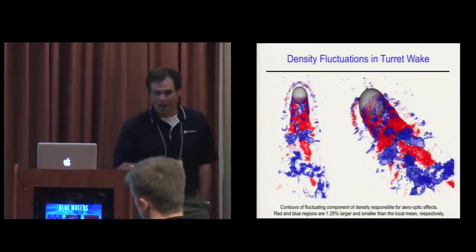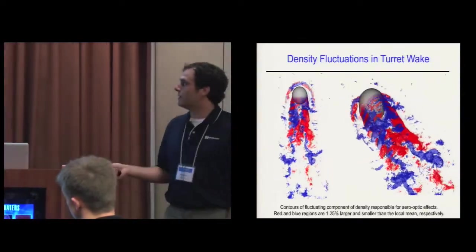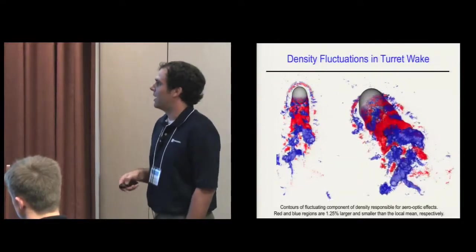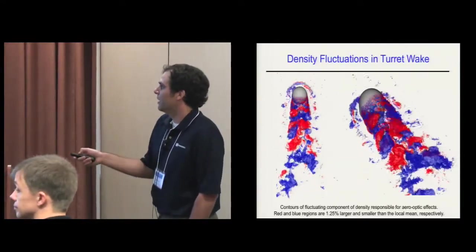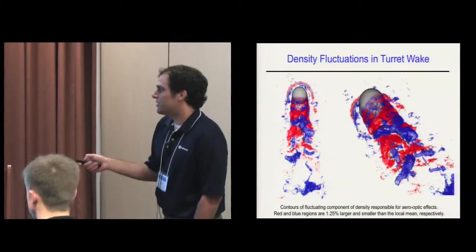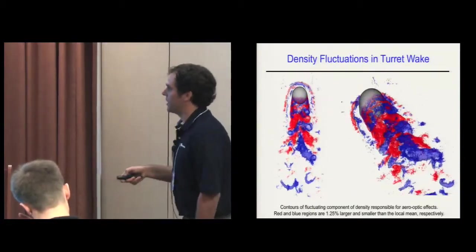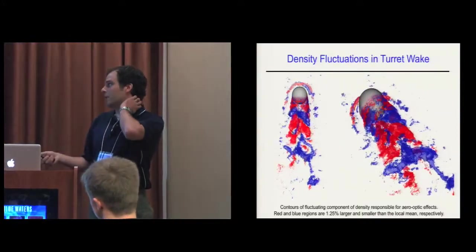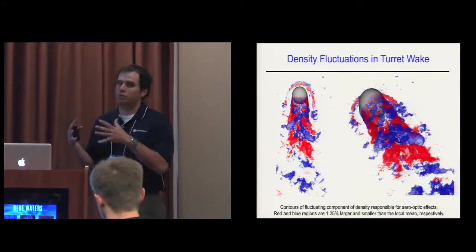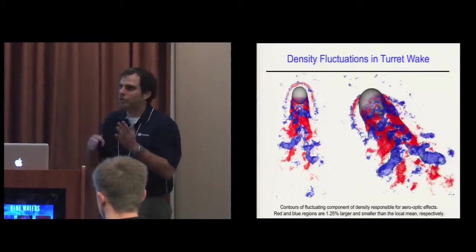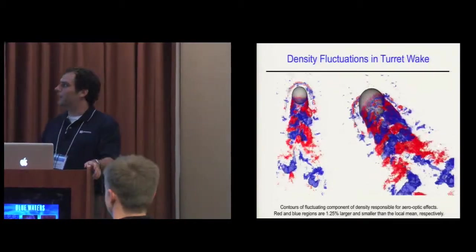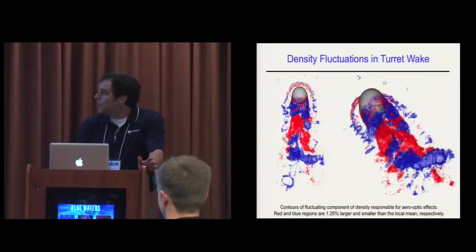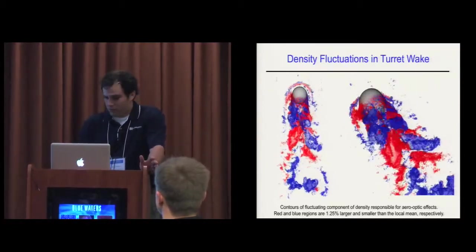This is the optically important parameter - the fluctuating density, where red is a higher region of density and blue is lower. You can see a lot of similar structures that you see in the pressure, because pressure is the driver, at least in the separated shear layer, to drive these aero-optical distortions.